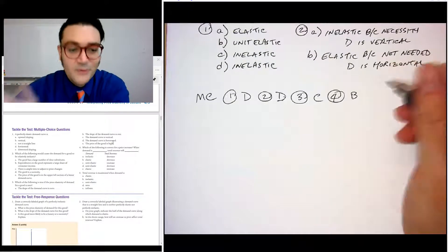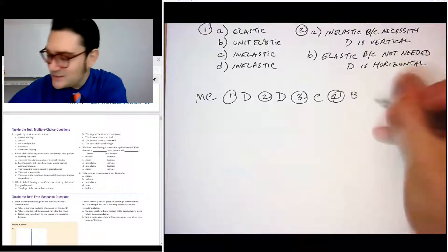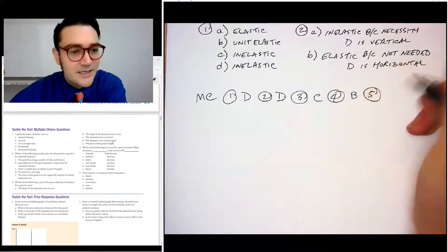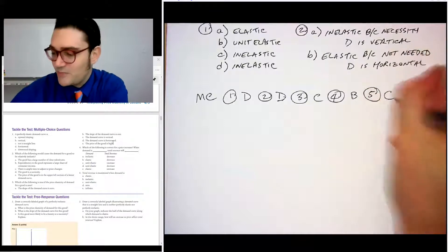Number five, total revenues. That's an easy one. Total revenues maximized when demand is unit elastic. I literally just said that. So the correct answer is C.